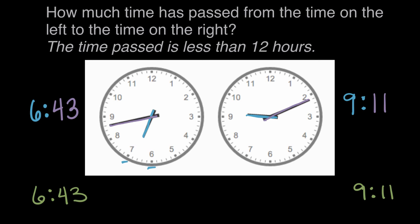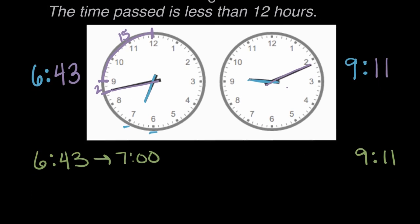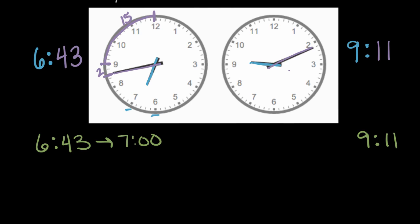One way we could figure this out is to break it into little parts. Let's first see how long it takes to get to seven o'clock. On this first clock, as soon as the minute hand gets to the top, it'll be seven o'clock. From where it is, it has two more minutes to get to the nine, and then from there, 5, 10, 15 more minutes to get all the way to the top of the clock. So until seven o'clock will be two minutes plus 15 more minutes, or 17 minutes.